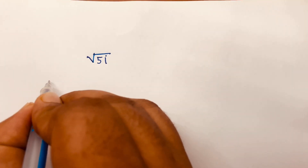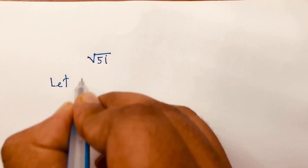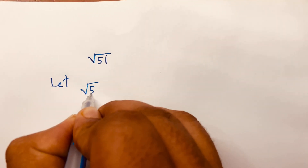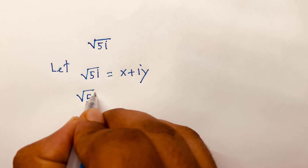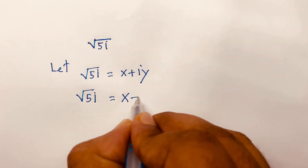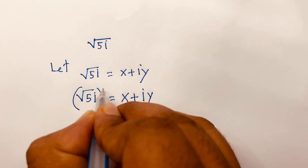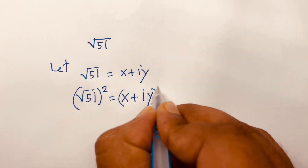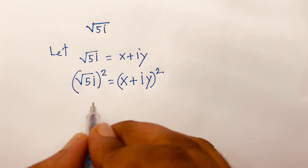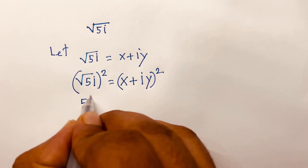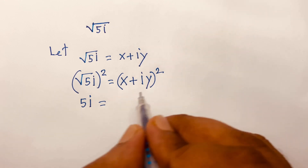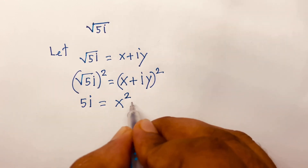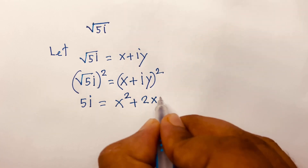Now I solve this using another method. Let square root of 5i equal x + iy. Squaring both sides — the square root cancels — so 5i equals (x + iy)². Using (a+b)² = a² + 2ab + b², this expands to x² + 2xyi + i²y².